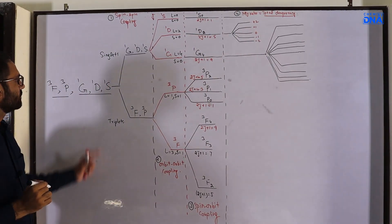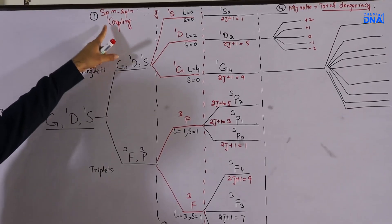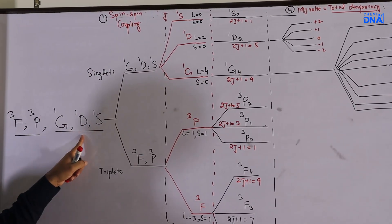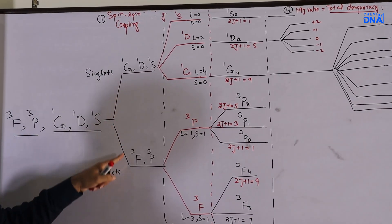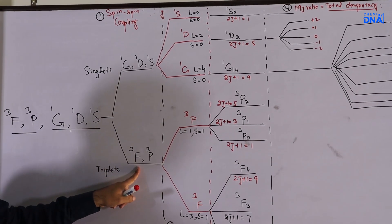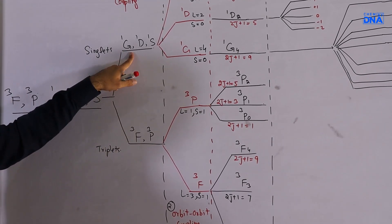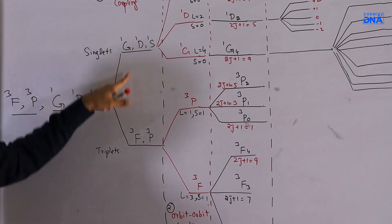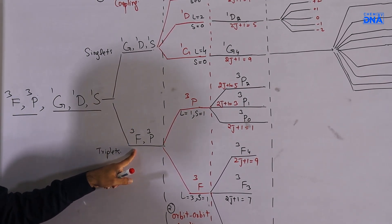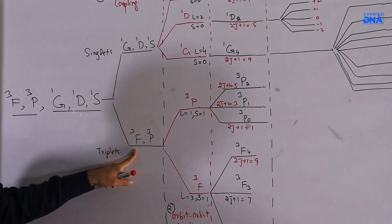When spin-spin coupling takes place, the triply and singly degenerate systems get separated. You can see that triplets fall lower in energy and singlets fall higher in energy. This pattern of separation is in accordance with a regular multiplet system.